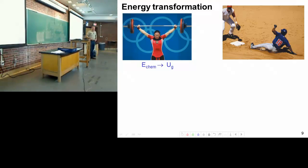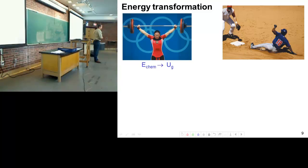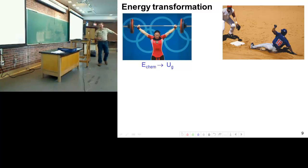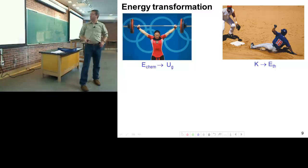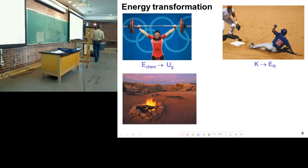Chemical to kinetic. If we think at the molecular level, chemical energy in him running becomes kinetic energy. Then as he slides, what's another energy transformation? It goes into thermal energy because of friction on the ground — kinetic energy from running turns into thermal energy.